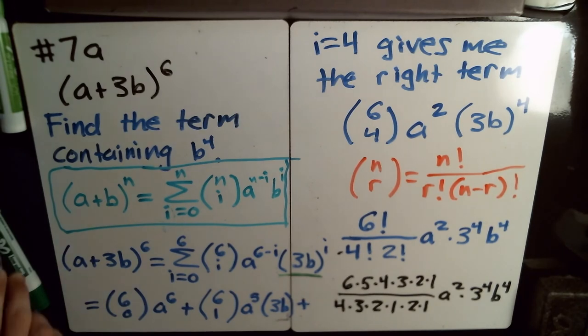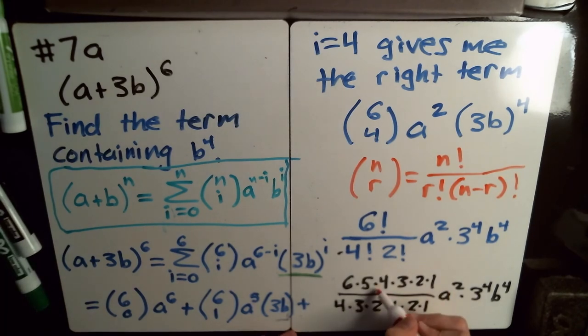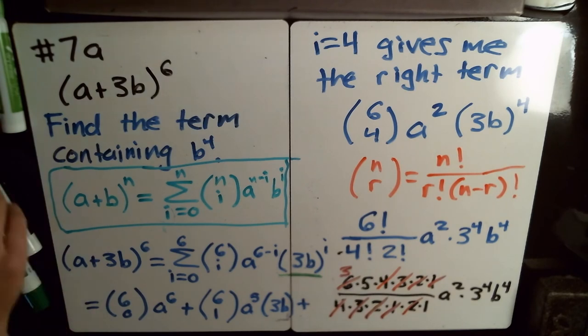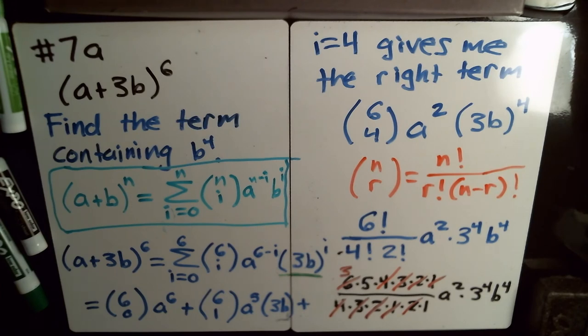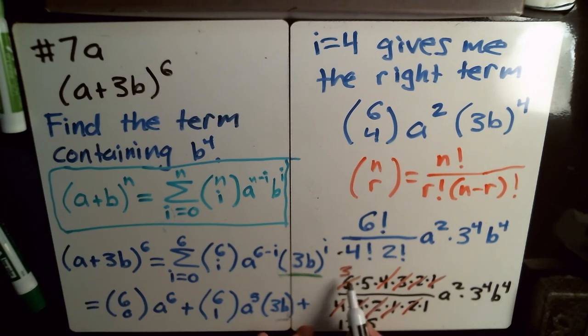Now we can just simplify this. Note that you can cancel out some stuff here. The 4, 3, 2, 1s, those cancel out because they're on the top and bottom. We can cancel out this 2 with the 6 to give me 3. So 3 times 5, which would be 15, and then times that 3 to the 4th that we have there. So 15 times 81 is 1215. So we end up getting 1215 because we do 3 to the 4th times 15, and then a squared, b to the 4th.